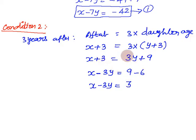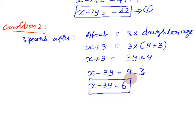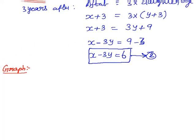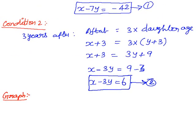So we have two conditions. We have two equations in algebraic form: x minus 7y equals minus 42, and x minus 3y equals 6. Now let's put these on a graph. We will put points in the first equation.